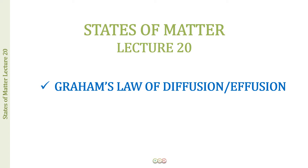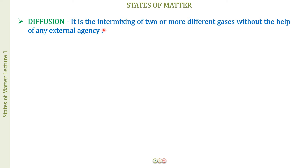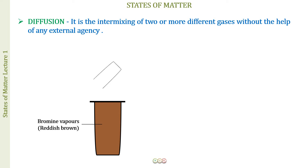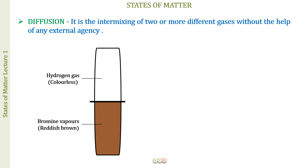We begin with understanding the two terms: diffusion and effusion. There is a slight difference between them, although Graham's Law is applicable to both phenomena in the same way. Diffusion is the intermixing of two or more different gases without the help of any external agency. We can understand this with an experiment: we take a cylinder filled with bromine vapors, which are reddish brown in color, and invert on top of it a cylinder filled with colorless hydrogen gas. Between both cylinders there is a separating disc keeping them from mixing.